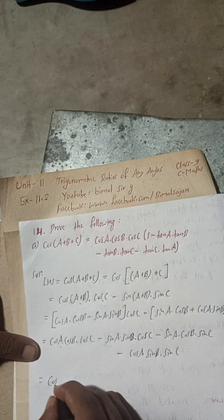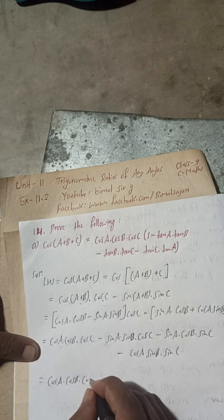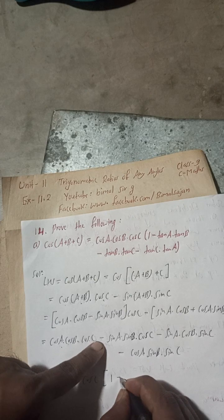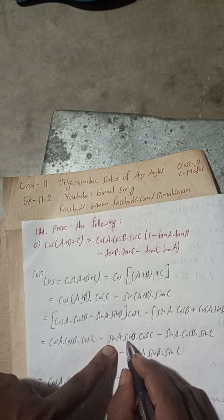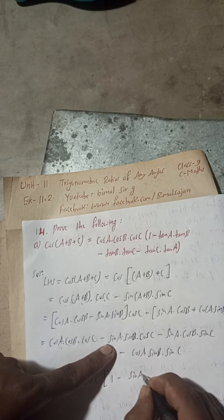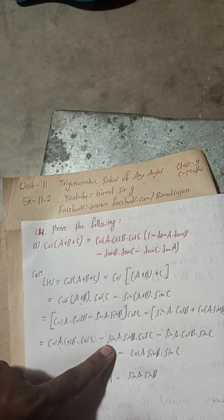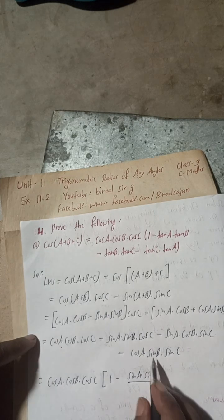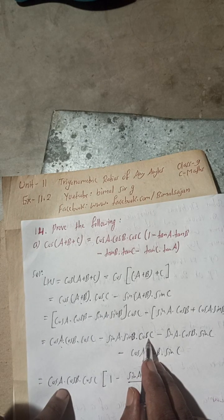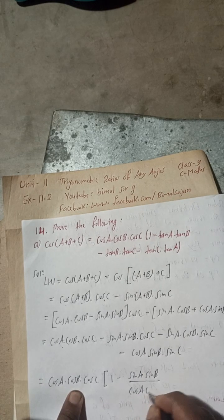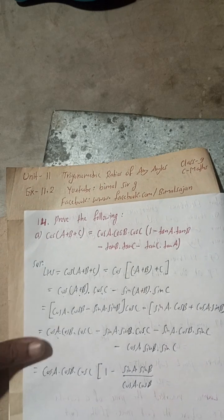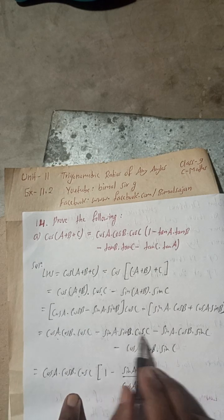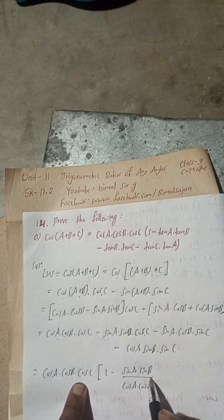We take cosA·cosB·cosC as common. Inside the bracket there will be 1, then minus the second term. For the term sinA·sinB·cosC, since cosC is already present in the common factor, we divide by cosA and cosB, which gives sinA/cosA · sinB/cosB = tanA·tanB.